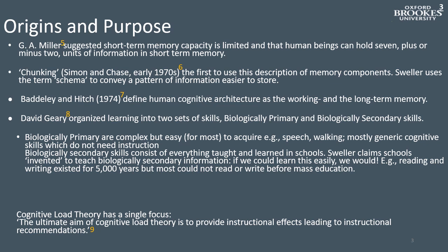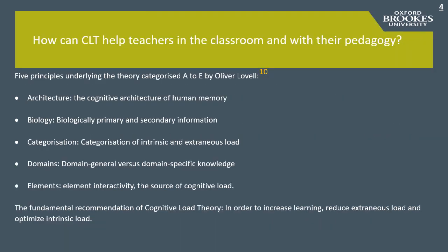The ultimate aim of cognitive load theory is to provide instructional effects leading to instructional recommendations. The five principles that underlie the theory have been helpfully given initial letters A to E by Oliver Lavelle: Architecture — the cognitive architecture of human memory; Biology — biologically primary and secondary information; Categorization — categorization of intrinsic and extraneous load; Domains — domain general versus domain-specific knowledge; and Elements — element interactivity, the source of cognitive load. Together, these five principles produce a fundamental recommendation: in order to increase learning, reduce extraneous load and optimize intrinsic load.